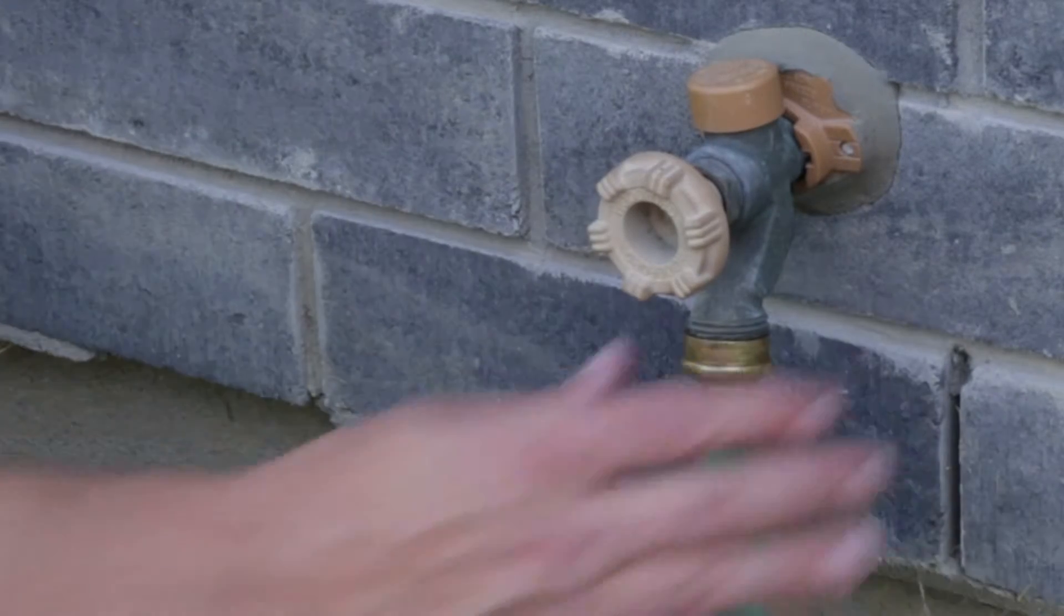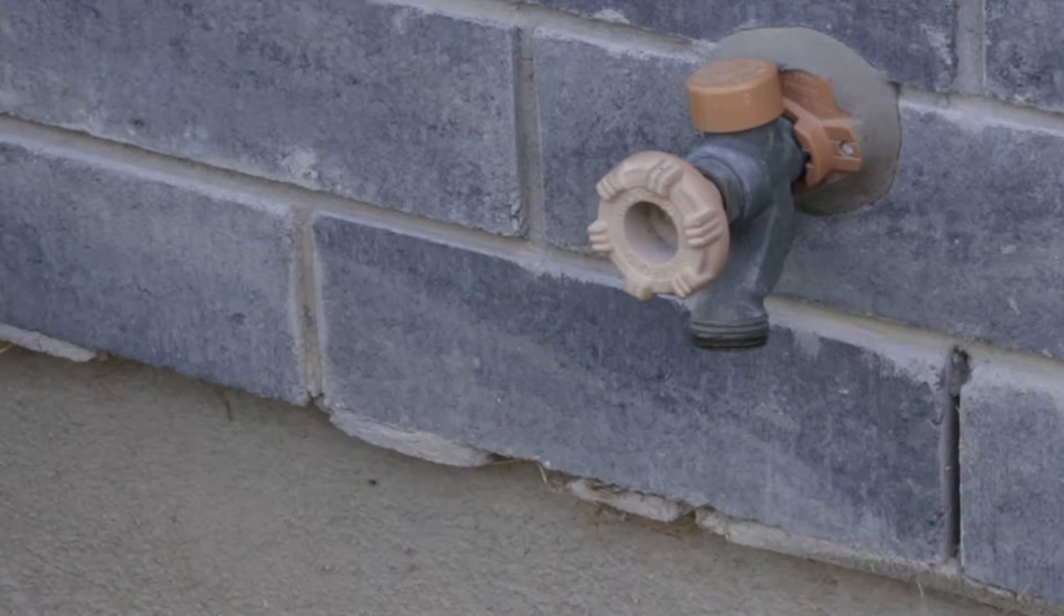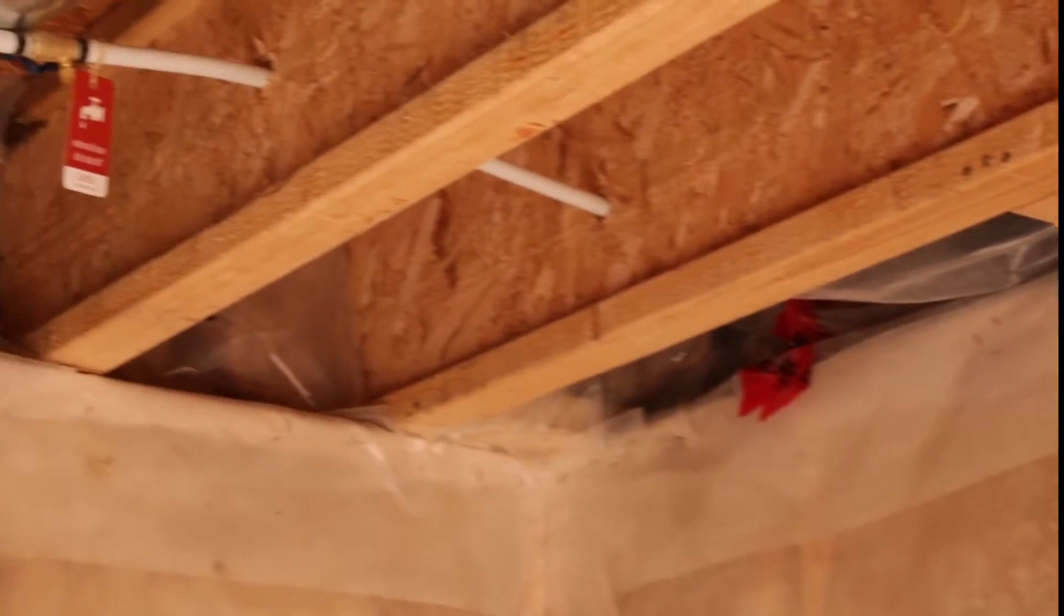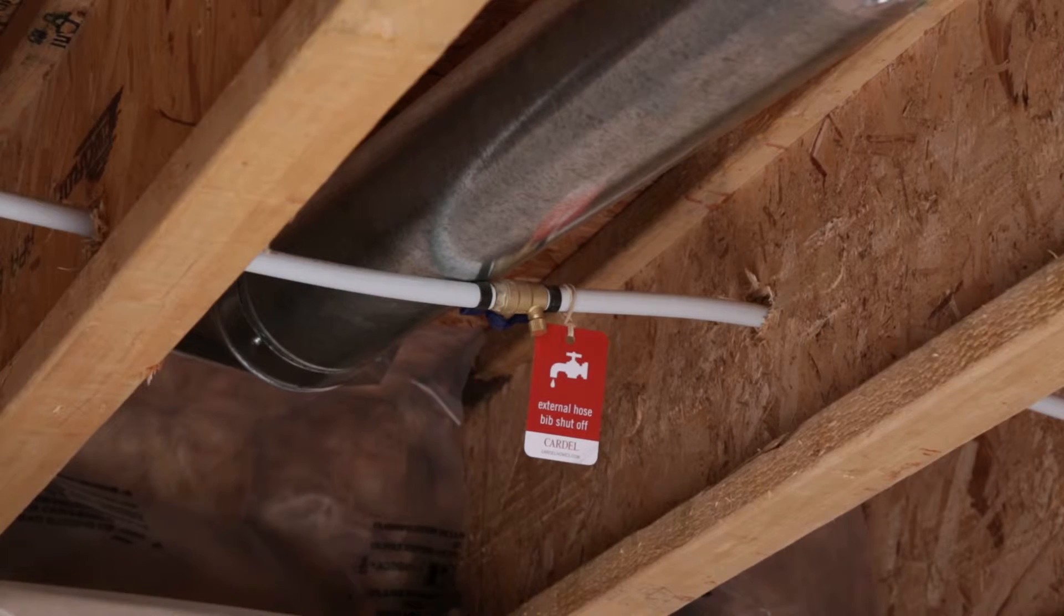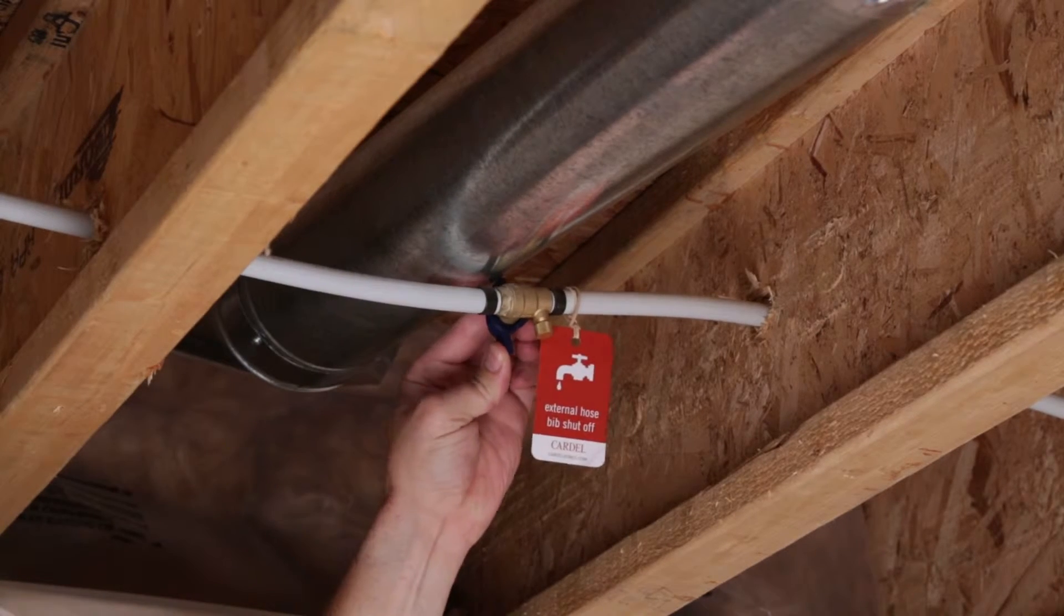Outside faucets are not freeze proof. Therefore, you must remove hoses during cold weather even if the faucet is located in your garage. The water supply shutoff location is where the water comes into your home in the basement near the meter. Turn the valve so the handle is perpendicular to the line.